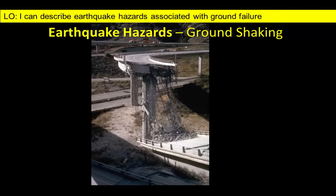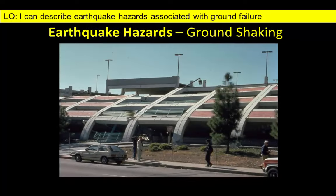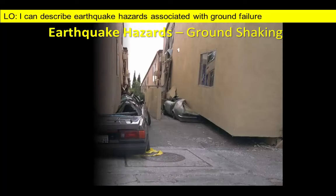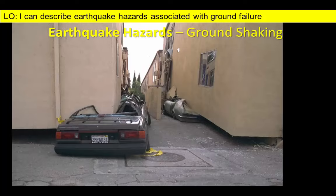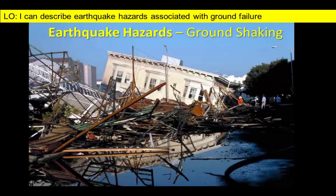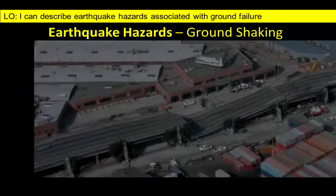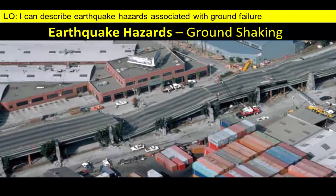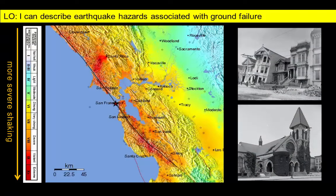One obvious consequence of shaking associated with an earthquake is the collapse of buildings and other structures. Rapid vertical and horizontal movements can shift homes off their foundations, collapse multi-story office blocks, and destroy elevated roadways. The colors on this map indicate the severity of shaking associated with the 1906 San Francisco earthquake. The red color indicates that shaking was most intense along the fault, and the transition from red to yellow to green indicates that shaking decreased farther to the east.